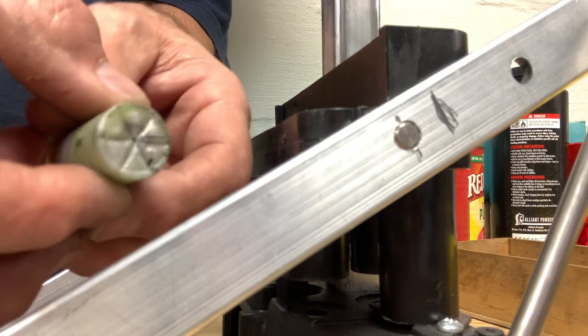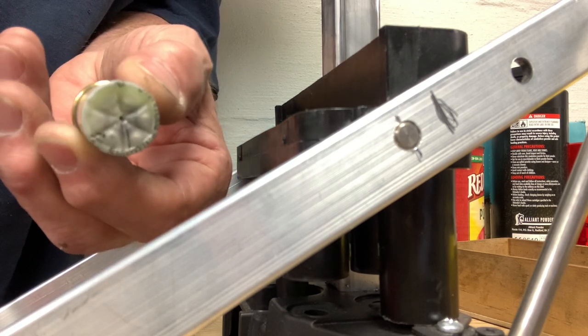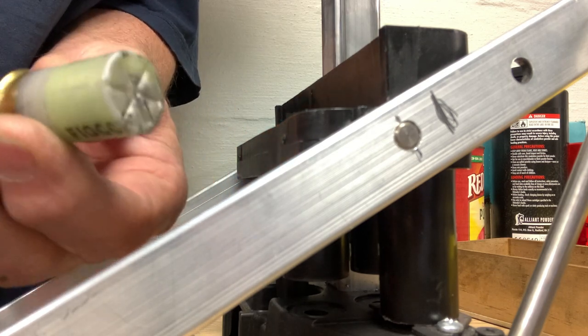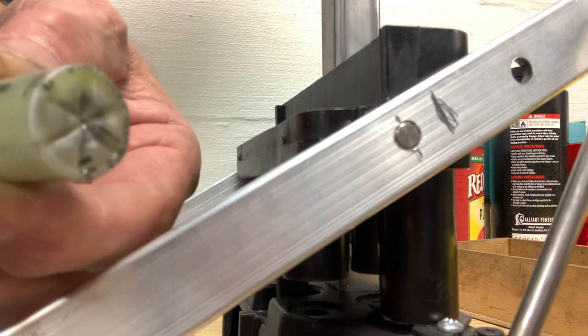But that's what I got - ruined the Lee Load-All, it's only for mini shells now. But I can make a fold crimp on a mini shell. Thanks for watching the video.